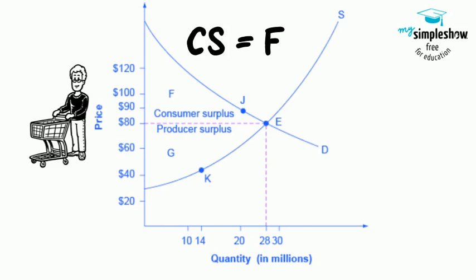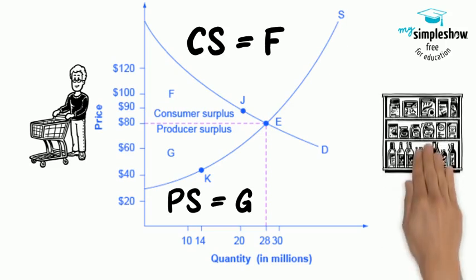The somewhat triangular area labeled by G shows the area of producer surplus, which shows that the equilibrium price received in the market was more than what many of the producers were willing to accept for their products. For example,